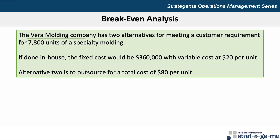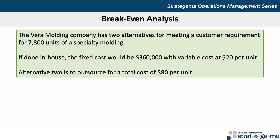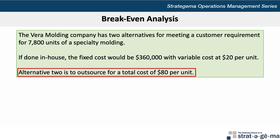The Vera Molding Company has two alternatives for meeting a customer requirement for 7,800 units of a specialty molding. If done in-house, the fixed cost would be $360,000 with the variable cost at $20 per unit. Alternative two is to outsource for a total cost of $80 per unit.